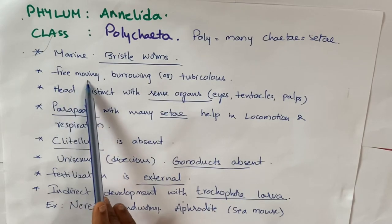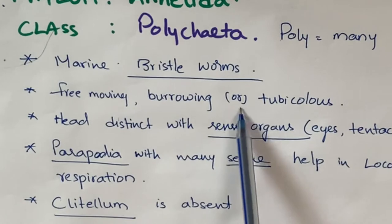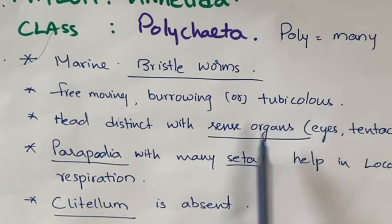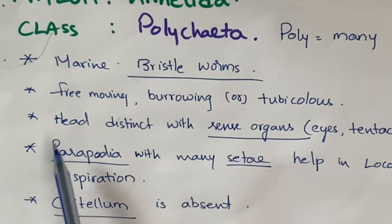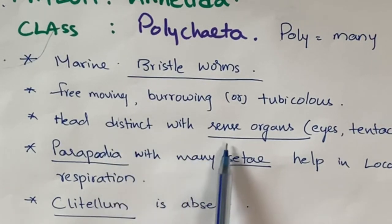These are free-moving, burrowing, or tubiculous animals. Burrowing animals make holes in the sand, while tubiculous animals form a tube-like structure and live inside the tube — that's why they are known as tubiculous animals. The head is distinct with well-developed sense organs.